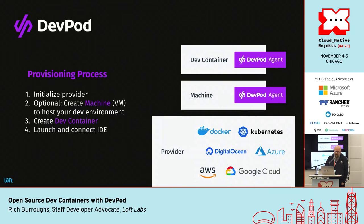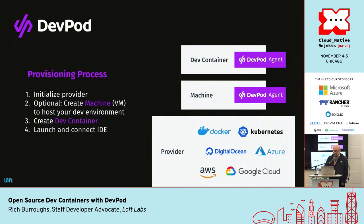The provisioning process works like this: DevPod initializes the provider; if it's a machine provider, it creates the VM; it creates the dev container itself; then it launches and connects to your IDE, usually using SSH. The DevPod agent runs both inside the dev container and in the virtual machine itself, because it manages the lifecycle of that machine.